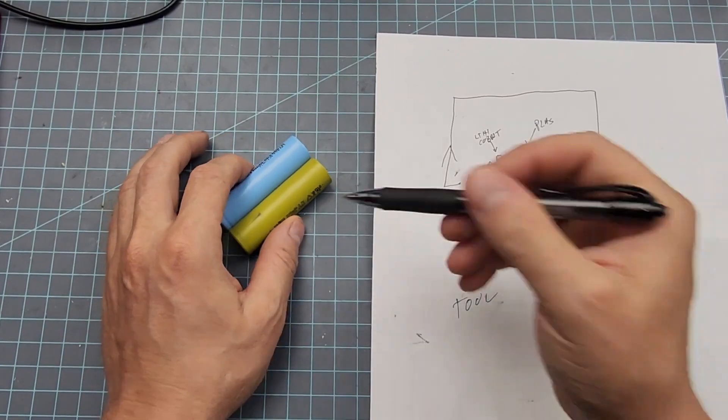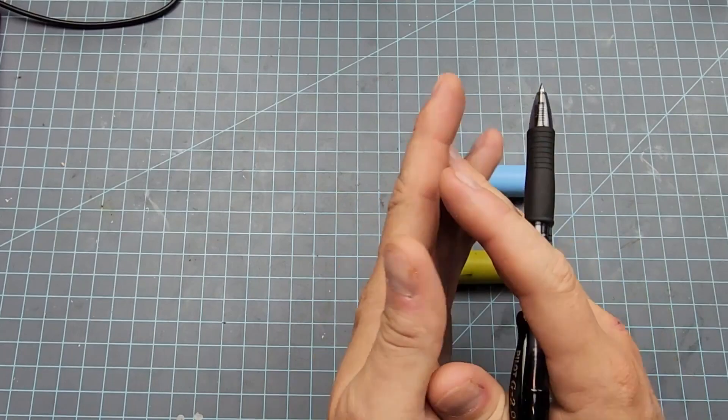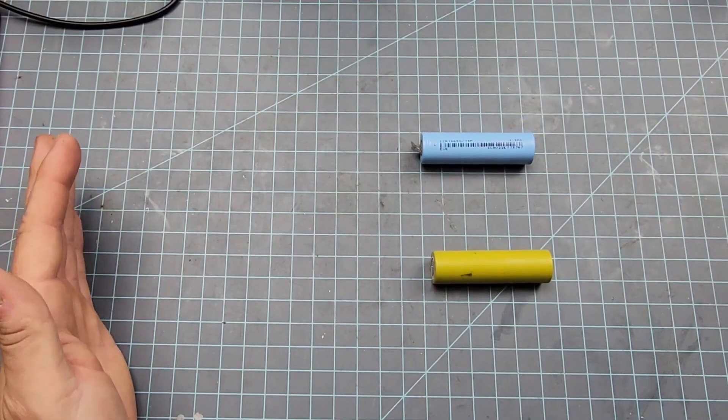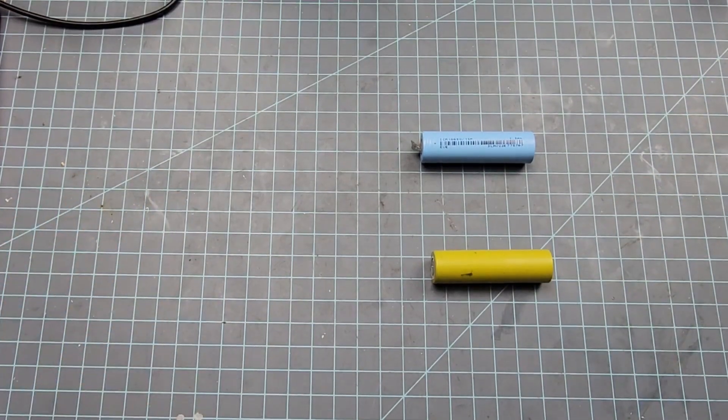When we take this thing apart, what we're going to find inside is a sheet of this copper and lithium, coated. And then we're going to see exactly what it looks like.